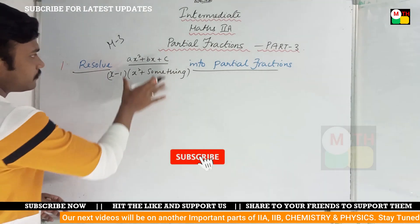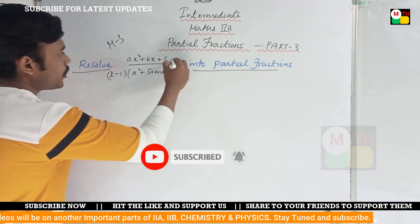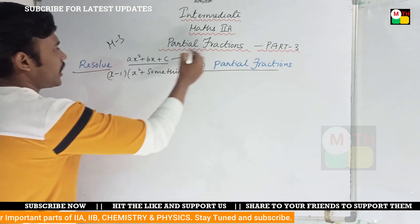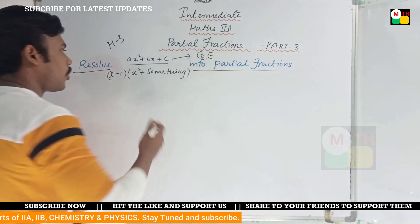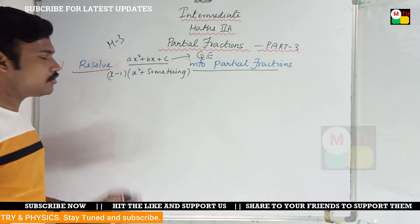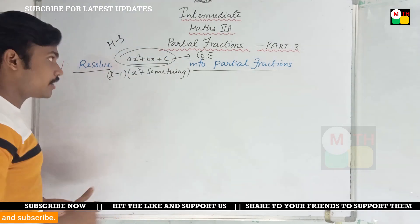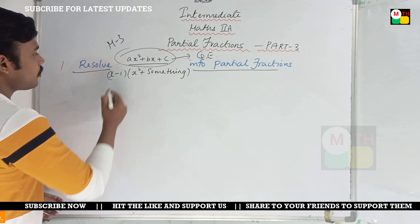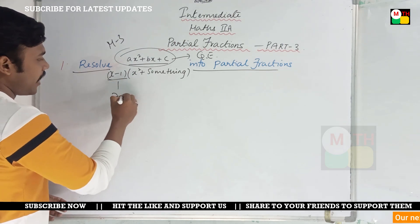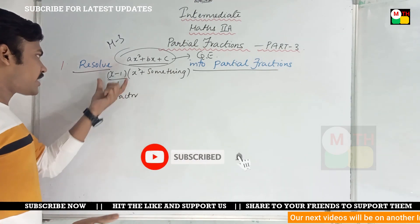In the first section, we have some function in the numerator. In the numerator, you have a quadratic equation. If you have a quadratic equation, you will then have a numerator. We will also talk about the denominator. The denominator is x minus 1 — that is a factor. You will see the first factor.